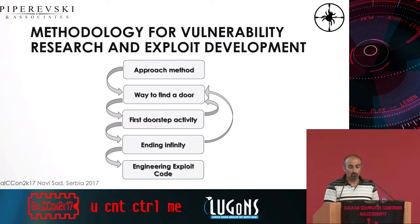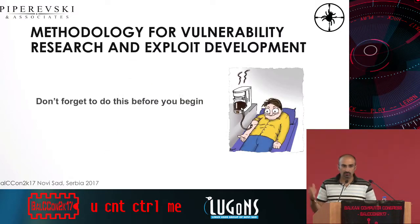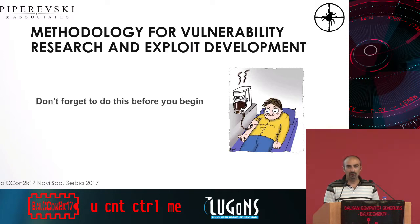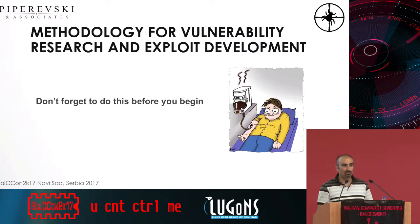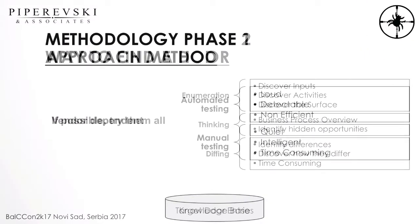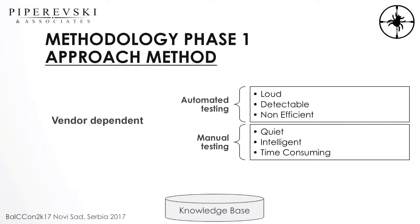Basically the approach method is at the beginning. Don't forget to get a lot of coffee. The approach method is vendor-dependent mostly. If you want to use automated tools, it will be loud, detectable, and immediately you should know it will not be efficient. This is 2017 — many targets already use best practices to make their solutions safer, so automated scanning tools are automatically non-applicable. They will get a lot of false results, saying it's secure when it's not.